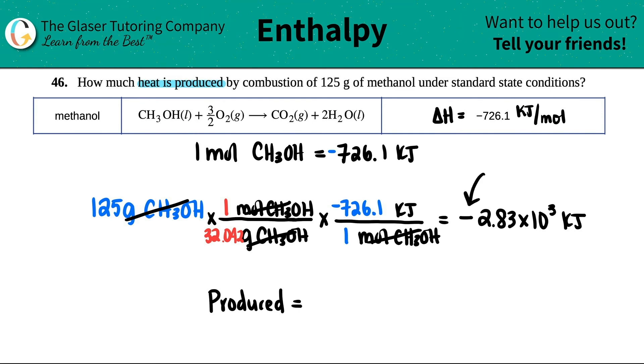A negative amount of heat? Remember, the negative just means that this amount of heat is going to be released. But how much is actually produced? 2.83 times 10 to the 3rd kilojoules.